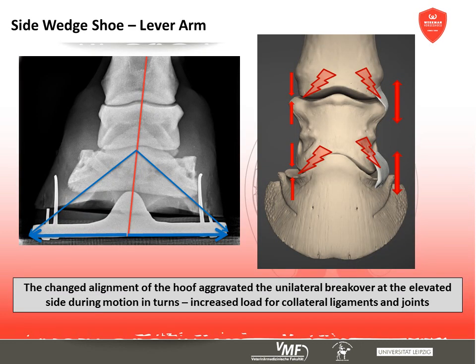Because the side wedge shoe influences the mediolateral alignment of the hoof, the unilateral unrollment over the elevated side in turns and bends is more difficult, and the leverage forces acting on joints and ligaments increase unfavourably.